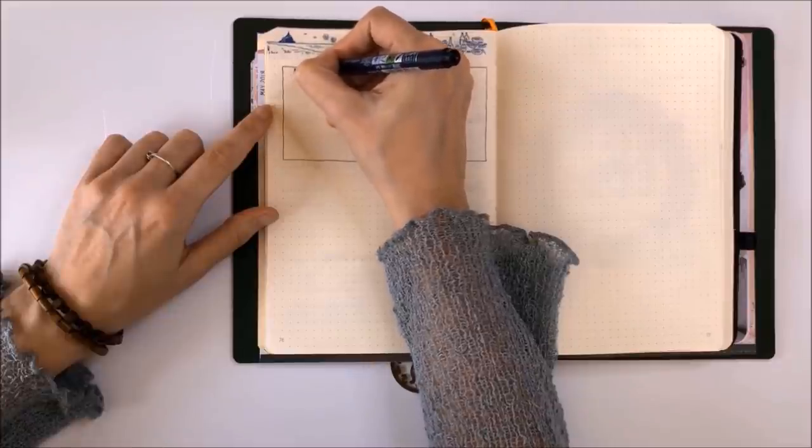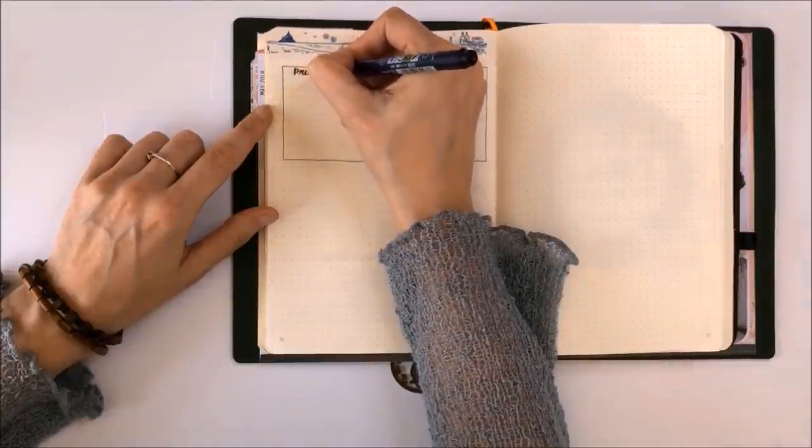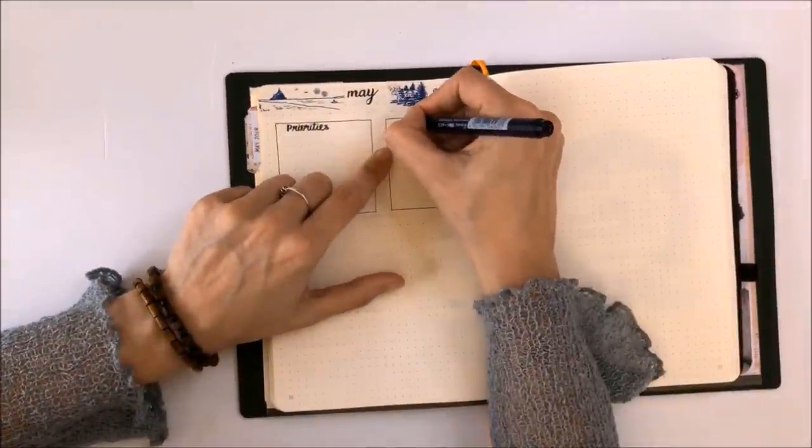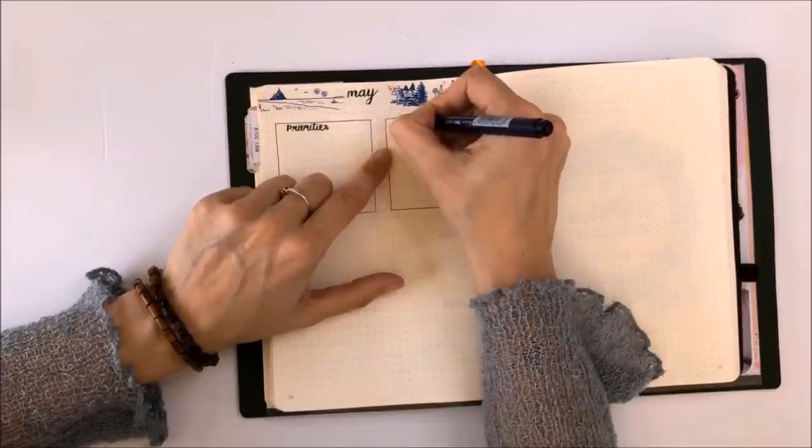I'm now using the Tombow calligraphy pen again. One of the boxes will be for my priorities for the week and the other one will be for a mini weekly tracker.